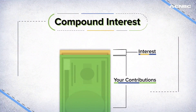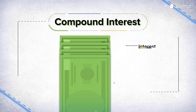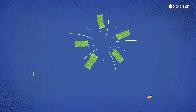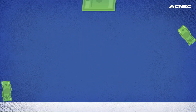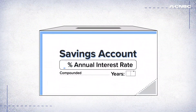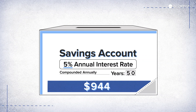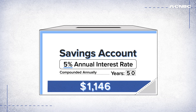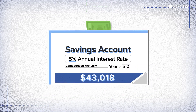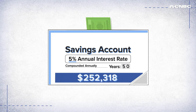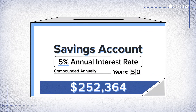Compound interest is different — it's essentially interest on top of interest. Use it correctly and you can turn small initial investments into small fortunes. Let's take that same $100 and the same 5% interest rate. If that interest rate compounds each year, your $100 would turn into $1,146 at the end of 50 years. But if you matched your initial investment of $100 each month without changing anything, you'd end up with $252,364 after 50 years. And if you can find a savings account that compounds more frequently, you'd have even more money.